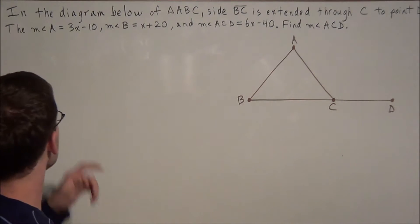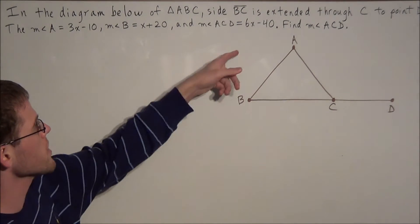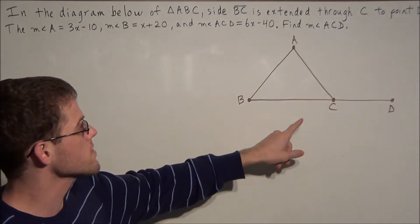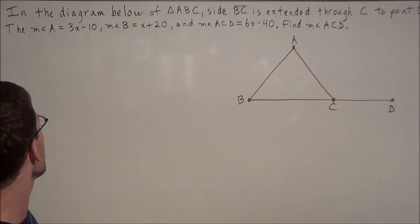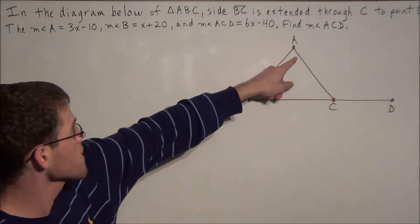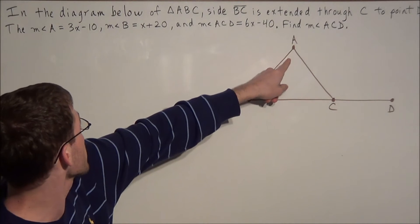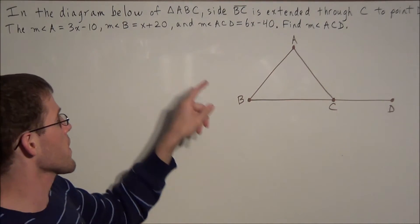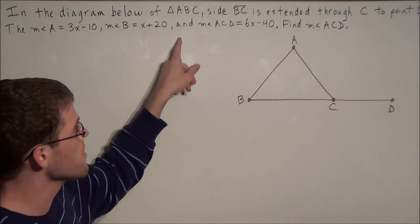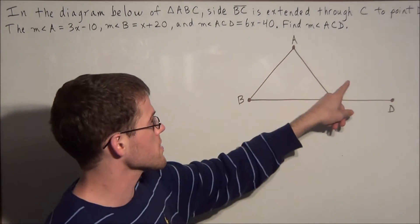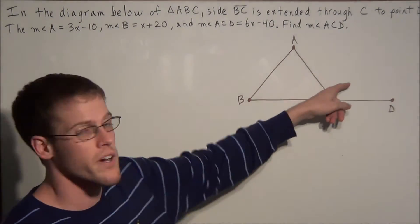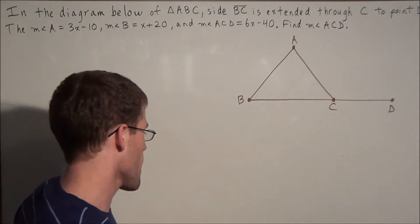In the diagram below of triangle ABC, side BC is extended through C to point D. We're told that the measure of angle A is equal to 3x minus 10, the measure of angle B is equal to x plus 20, and the measure of angle ACD is equal to 6x minus 40. We need to find the measure of angle ACD.